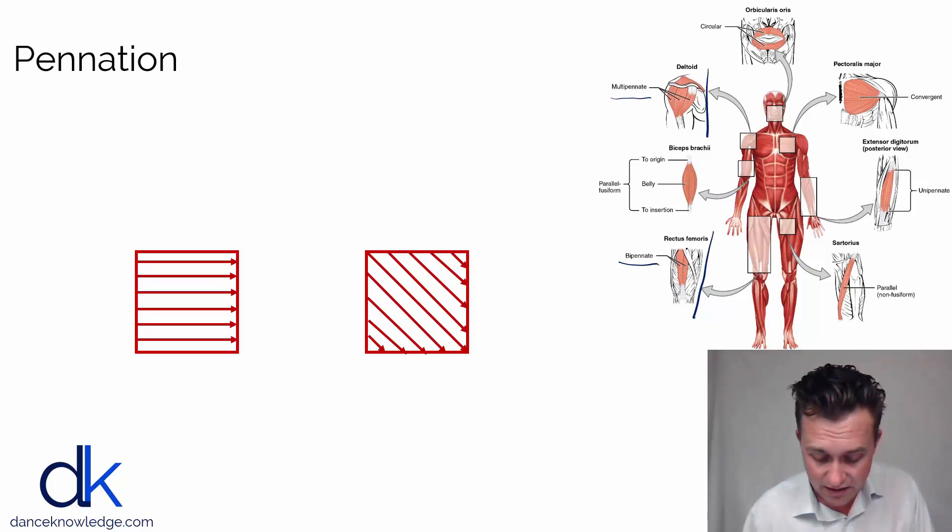Basically what this means is that the rectus femoris could be divided into two, hence the bi prefix. And the pennate means that those two sections have muscle fascicles and fibers that are at two different angles to one another.